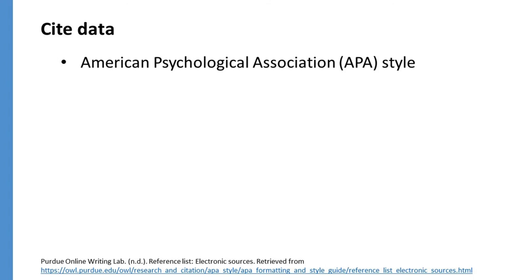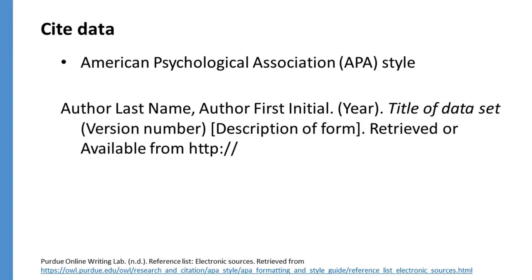Many citation styles or journals offer guidelines on citing datasets. For example, the APA suggests that citations include the author's name, the year, the title, and the version number, as well as a description of the form.